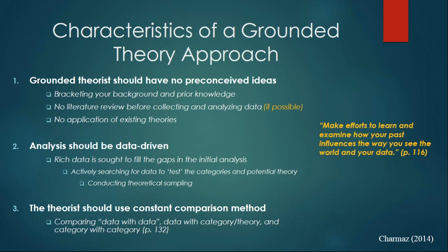You have to conduct theoretical sampling. It's the second stage of sampling where, based on the initial analysis and the questions you have concerning your initial analysis, you go and look for people or documents that you can analyze to get more information — rich information — to address the gap or the questions you have based on the initial analysis.